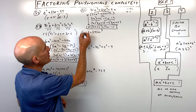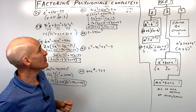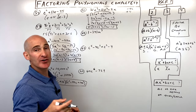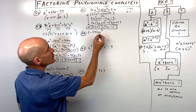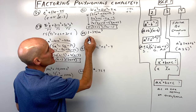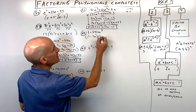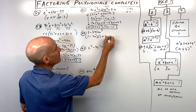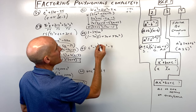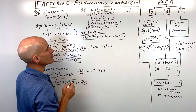Number sixty-two, 1 minus 343m cubed. Knowing your perfect cubes really helps here: 343 is 7 cubed, so this is a difference of two cubes. It factors to 1 minus 7m times 1 plus 7m plus 49m squared. Same, opposite, always positive — and we can't factor further.